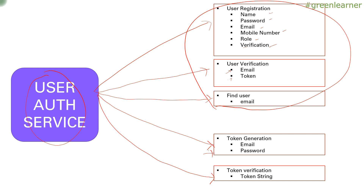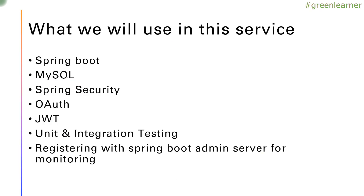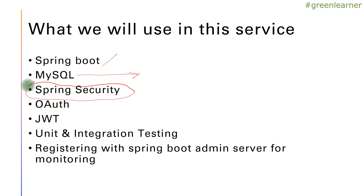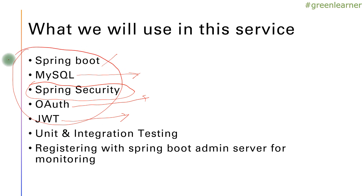This is the general structure of the user auth service and these are the couple of endpoints. From a technology perspective, we are going to use Spring Boot; to store the user information we are going to use MySQL; and we are going to use Spring Security to secure the application. We are also going to implement an OAuth server with JWT — JSON Web Token — and I am going to explain all about it in further videos.